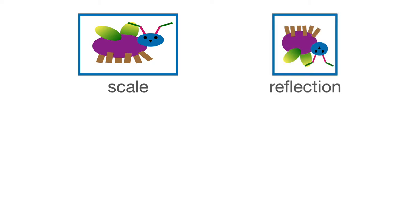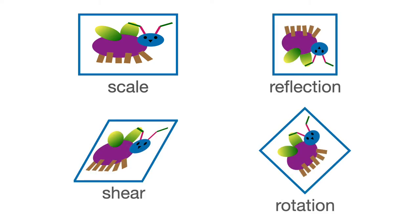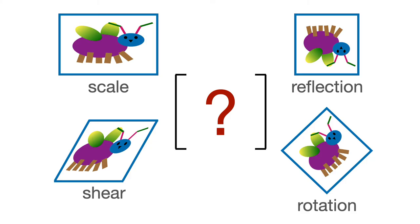Each matrix encodes a different transformation: a scale, a reflection, a shear, or rotation. But how do all of these things fall out of the same matrix?